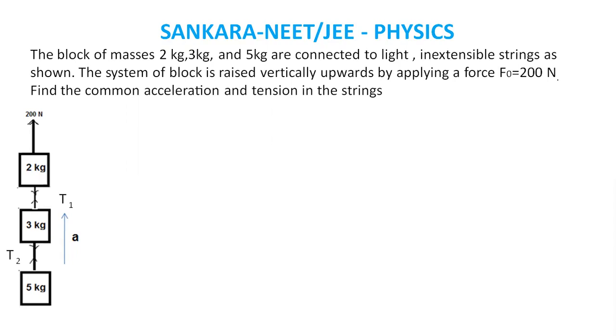3 kg and 5 kg are connected by T2. Free body diagram for 2 kg: the equation is 200 minus T1 minus 20 equals 2A. First equation.